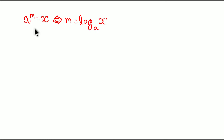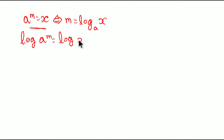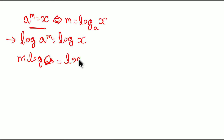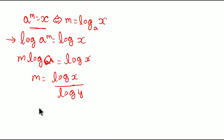Now I will explain why we can write A power M equal to X as M equal to log of X to the base A. If you take log on both sides of A power M equal to X, you get log of A power M equal to log X. Whenever you have log of A power M you can write it as M into log A. So M into log A equals log X, giving us M equal to log X by log A. This is our second principle. Whenever you get log X by log Y you can write it as log of X to the base Y — that is our third principle.